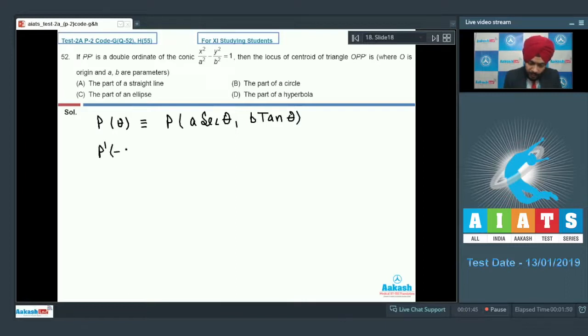So P' with the parameter minus theta, the coordinates of P' will be given as A sec of minus theta, which is A sec theta only, and B tan of minus theta that is minus B tan theta. O is origin, the intersection point of x axis and y axis.